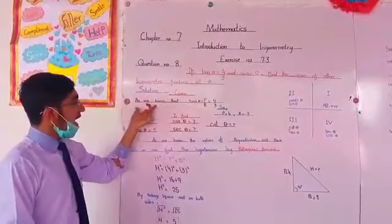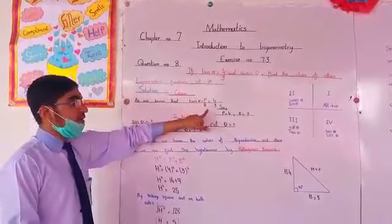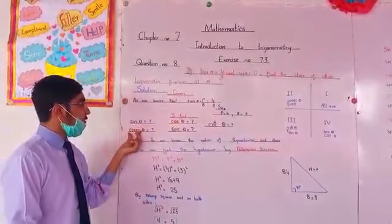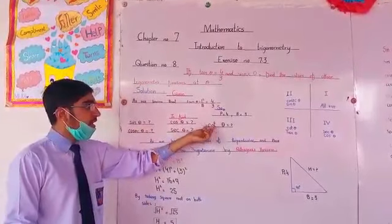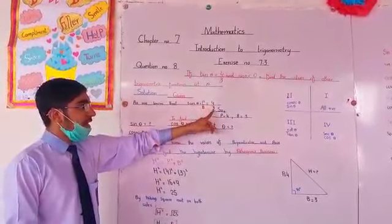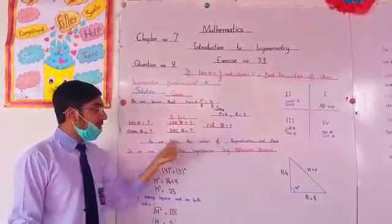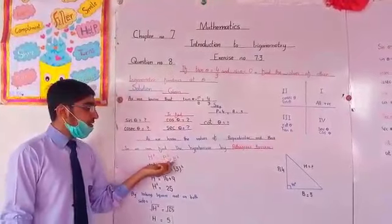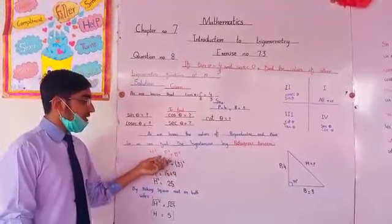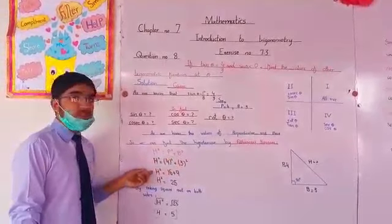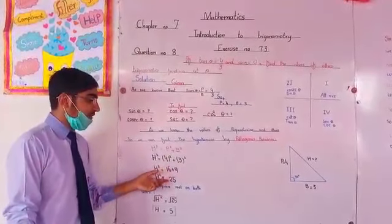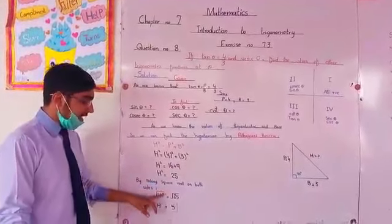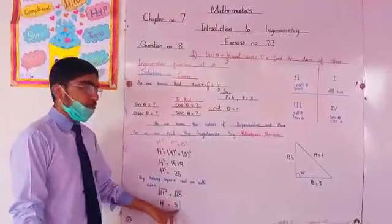Now we will come to the question. As we know that tan theta is equal to perpendicular over base — the given perpendicular is 4 and base is 3. So we will find sin theta, cosec theta, cos theta, sec theta, and cot theta using these values. We can find the hypotenuse by Pythagoras theorem: hypotenuse squared equals perpendicular squared plus base squared, which is 4 squared plus 3 squared, equals 16 plus 9, equals 25. Taking the square root on both sides, hypotenuse equals 5.